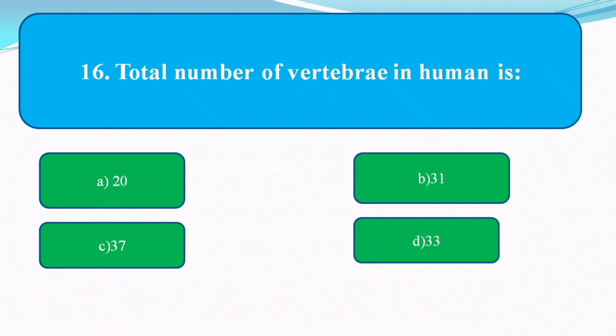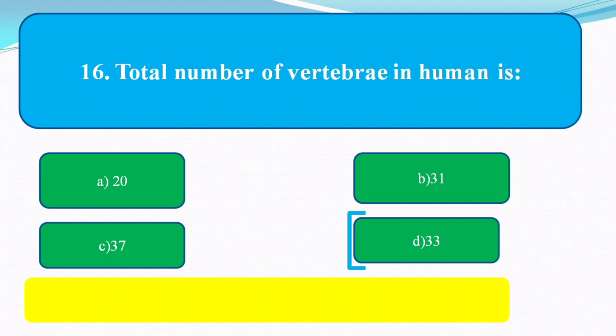The total number of vertebrae in the human body is? The options are: 20, 31, 37, 33. The answer is 33.